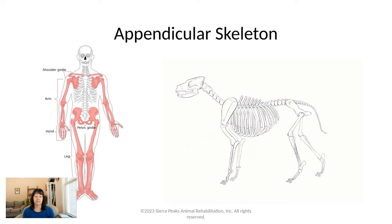Dogs actually don't stand plantigrade. If we got onto our hands and knees, our metacarpals and phalanges would be parallel to the floor. But in dogs, from the carpal joint through the metacarpals, they are actually upright and in a perpendicular position to the floor. So dogs stand on their toes and their paw pads, not on their metacarpals.